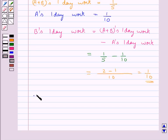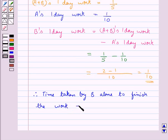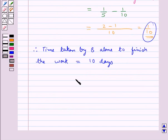So this would mean time taken by B alone to finish the work would be equal to 10 days. Since in one day the work finished by B would be one tenth of the work. So in 10 days B finishes the whole work. So final answer is 10 days.